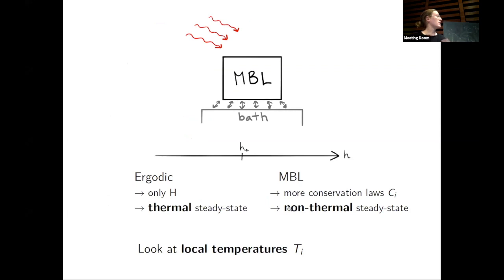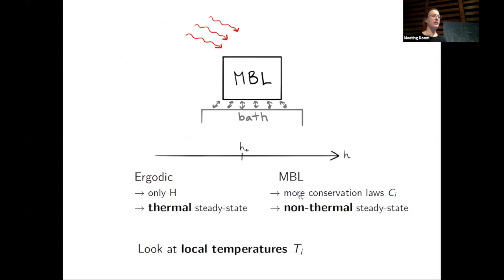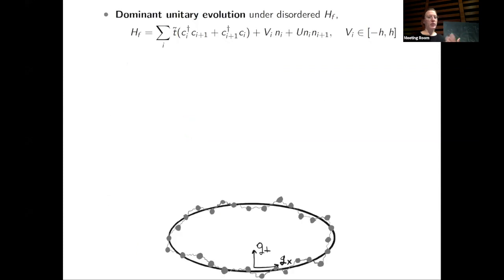What we expect and look for is this difference in the stabilized steady state. Since on the ergodic side we expect a thermal one, a very natural way to characterize the difference between the two is to look at the local temperatures, which should not vary on the ergodic side and should vary very strongly on the MBL side.